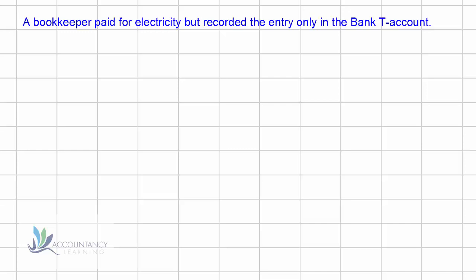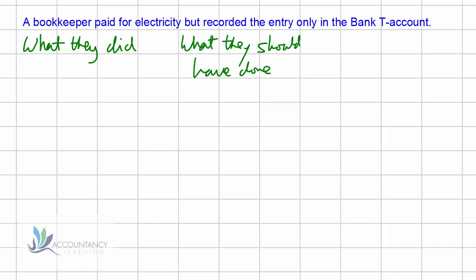Here's a typical example. A bookkeeper paid for electricity but recorded the entry only in the bank T-account. The way to approach this logically is to prepare three columns on your scrap paper. In one column write down the double entry for what they actually did, which is wrong. Then in the second column write what they should have done — the correct entry for this particular transaction.